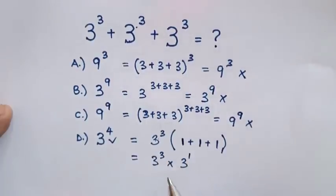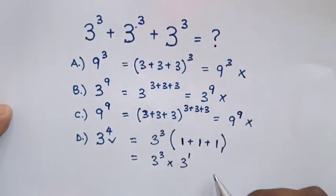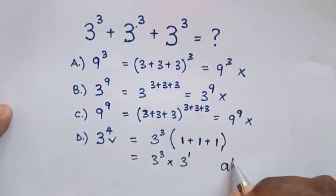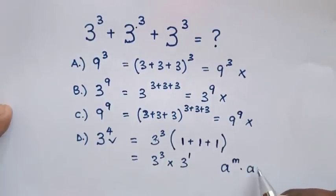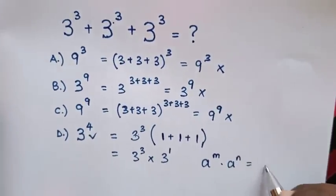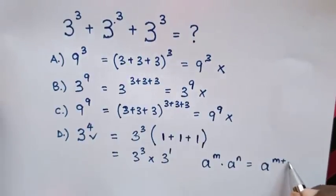We will apply the exponential rule: a^m times a^n equals a^(m+n).